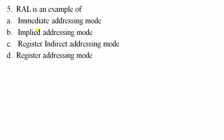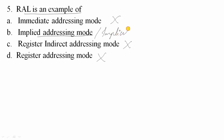Fifth question: rotate accumulator left with carry flag is an example of — not immediate addressing mode, not register indirect addressing mode, not register addressing mode. It is implied addressing mode or implicit addressing mode. The suitable option is option B.